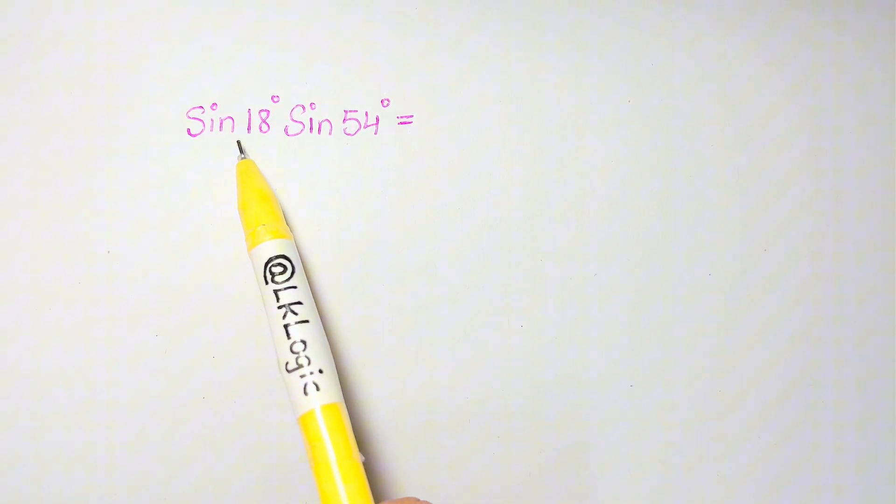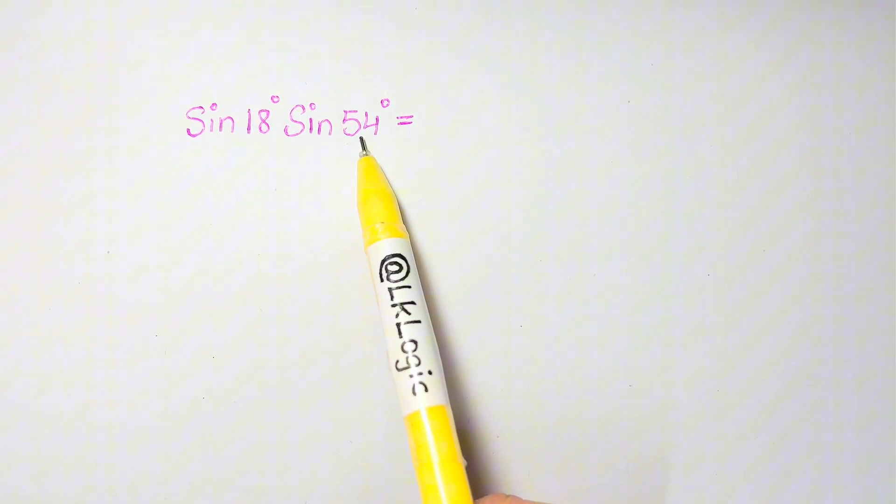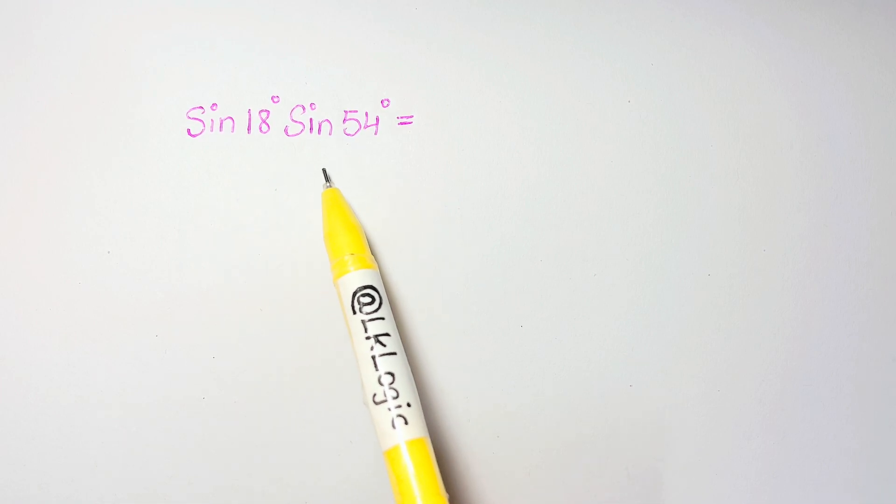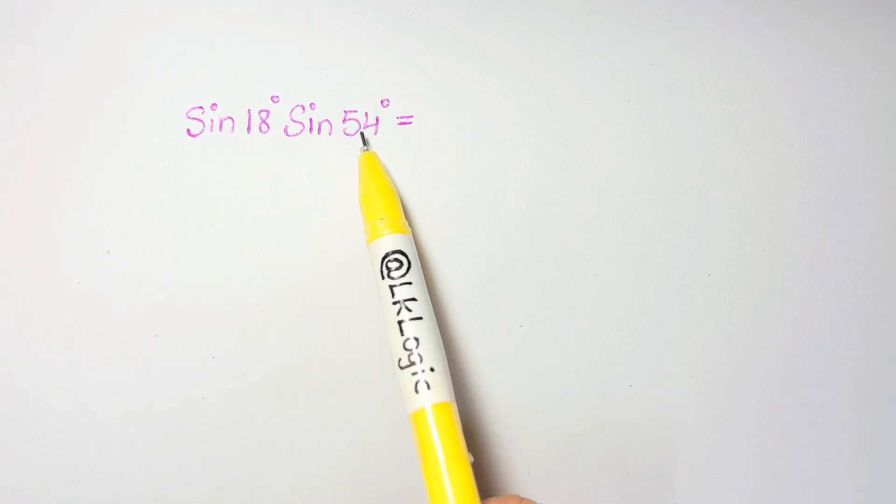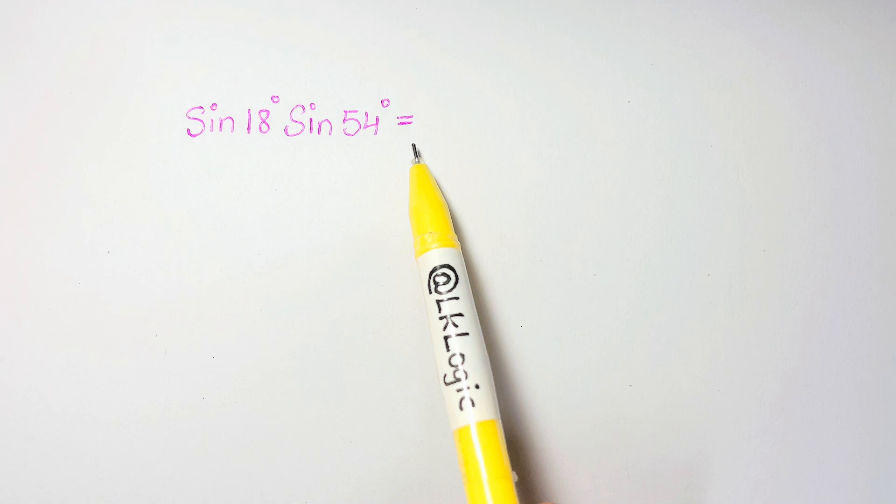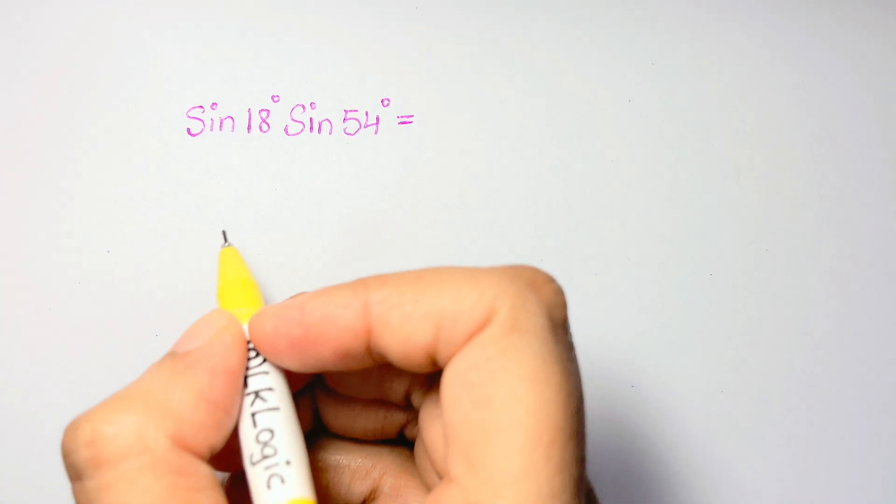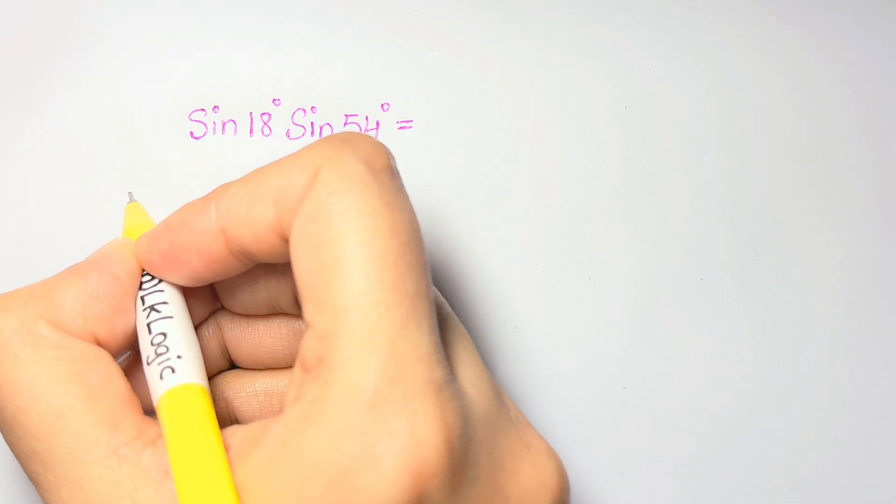Hi guys, here we have a very simple trigonometric problem which says sine 18 degrees times sine 54 degrees equals what? You have an interestingly simple answer for this one.